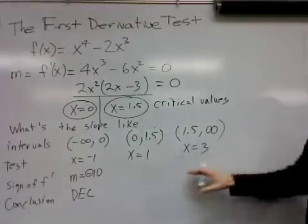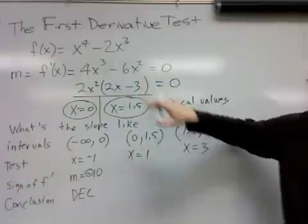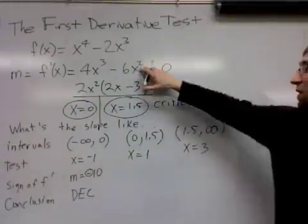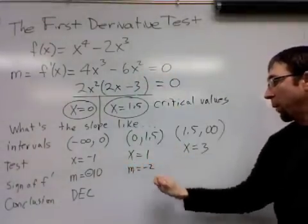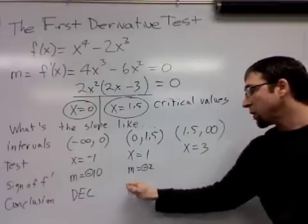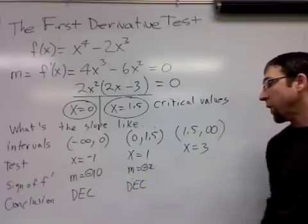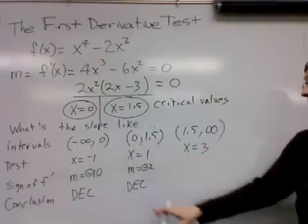What's going on to these other numbers, too? What happens when x is equal to 1? Plug 1 in for x, and you get 4 minus 6, or the slope is -2. And we're after the sign. The sign's negative, so the conclusion is that the slope will be negative for all numbers between 0 and 1.5. In other words, the graph is falling.